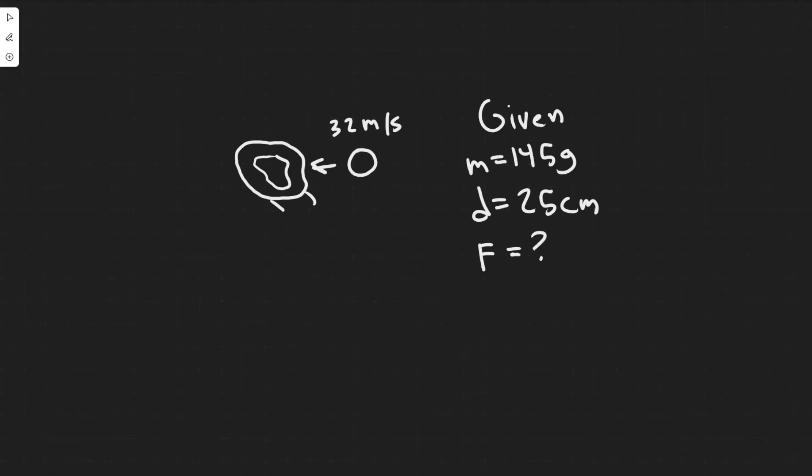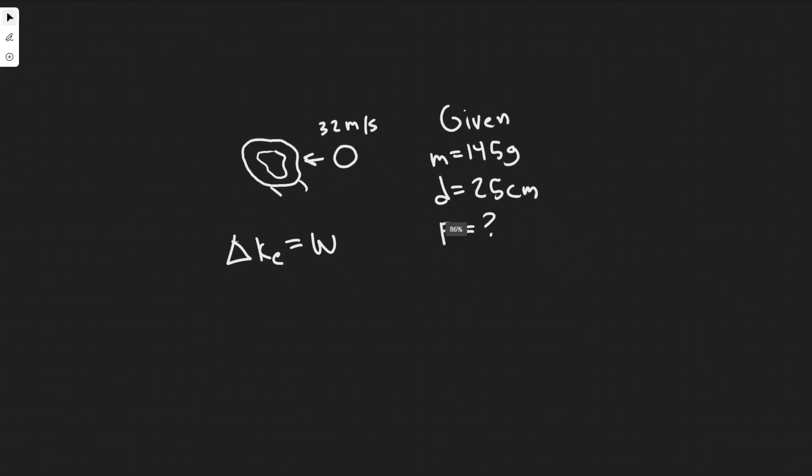The way we're going to do that is by looking at the work energy theorem, which basically tells us that the change in the kinetic energy is equal to the work. So if we can find the change in the kinetic energy of the ball, it's going to be equal to the work done on the ball.